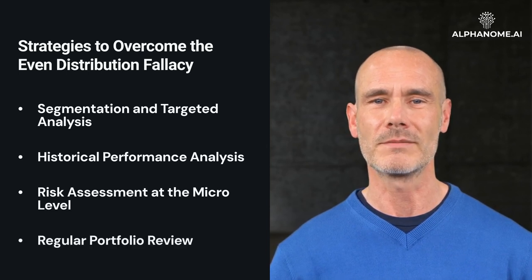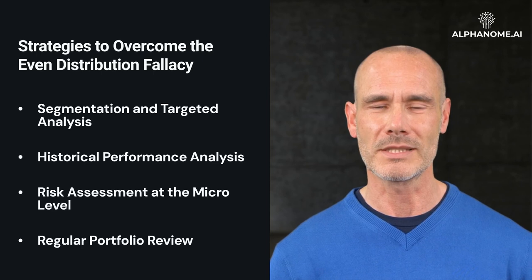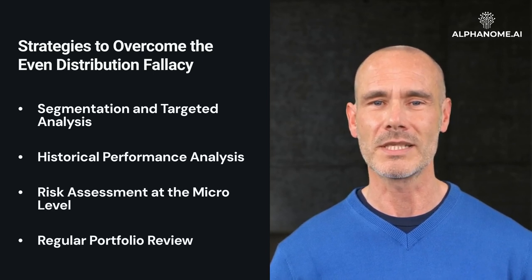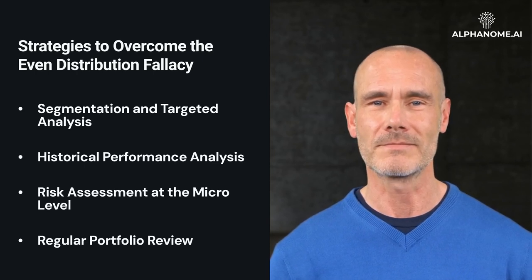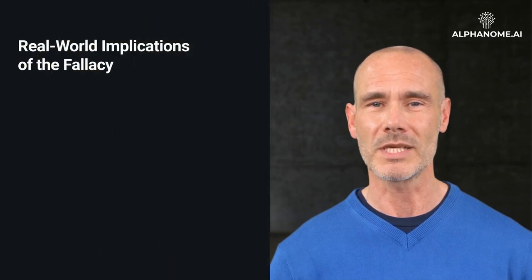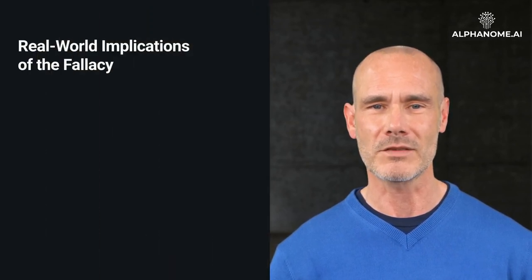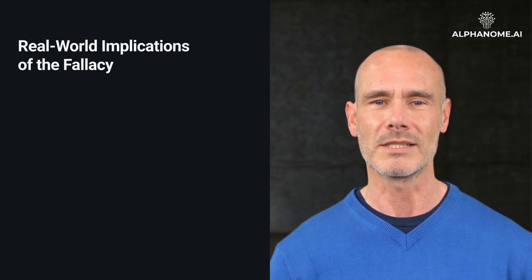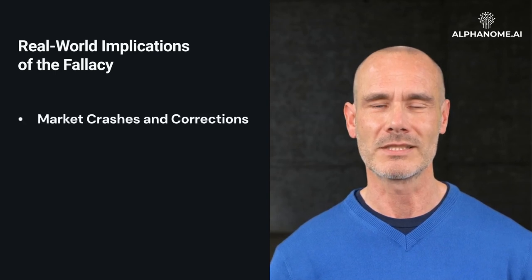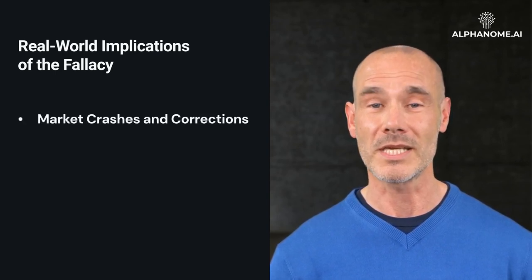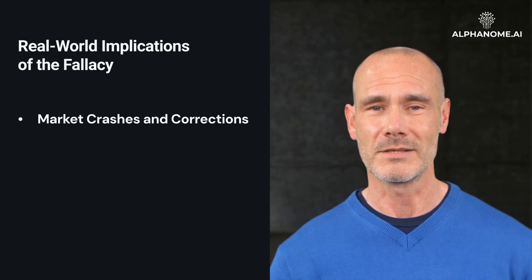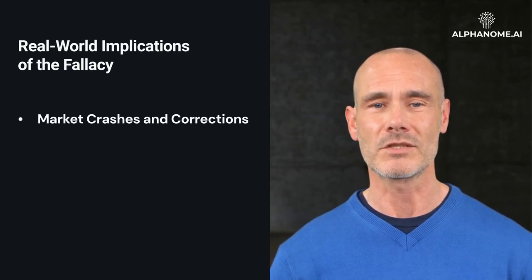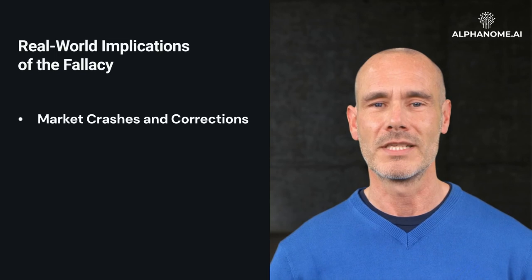Regularly reviewing and rebalancing your portfolio can help identify areas where the assumption of even distribution might have led to suboptimal investment choices. During market downturns, sectors or indexes that seemed uniformly strong can reveal significant weaknesses, and investors who assumed an even distribution of strength across all assets might face unexpected losses.